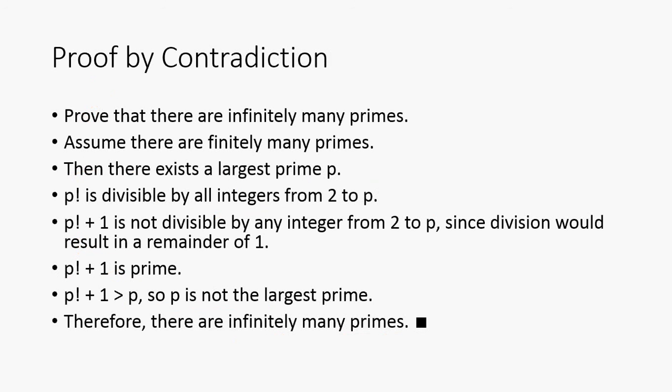Next we have our proof by contradiction. This is going to be the famous proof done by Euclid I think or Euler, one of those guys. We're going to prove that there are infinitely many primes. Here we're going to assume the opposite: assume that there are finitely many primes. If there's like a finite number of things we just choose the largest one because there has to be a largest one, right? And then we set that equal to P.